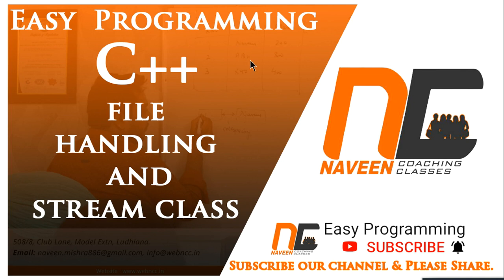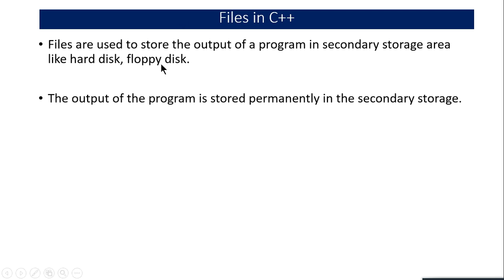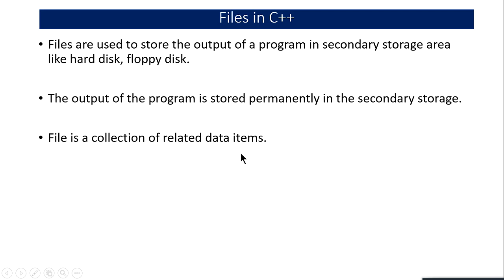Let's start with this video tutorial on file handling and stream classes. When you write a program and run it, whatever output you see is removed as soon as you close the output screen. If you want to store this information for future use, you must save it in secondary storage such as hard disk and floppy disk. The output of the program is stored permanently in these storage devices.